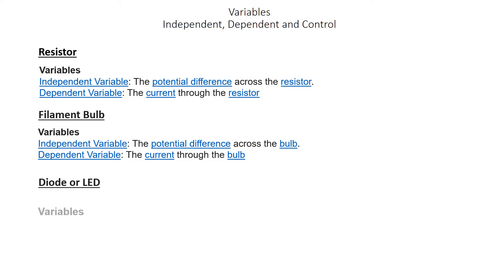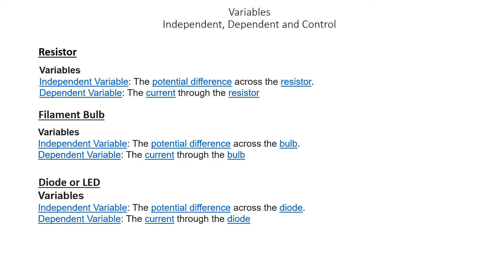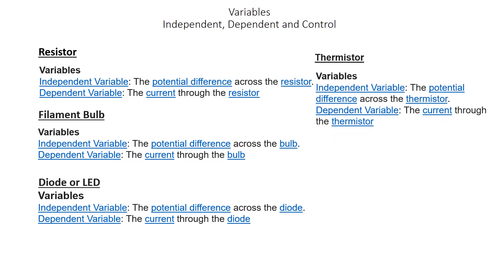Then the diode or LED - the independent variable is the potential difference across the diode, and the dependent variable is the current through the diode. Then the thermistor, the last one, the pièce de résistance - the independent variable is the potential difference across the resistor, and the dependent variable is the current through the thermistor.